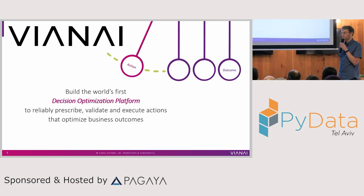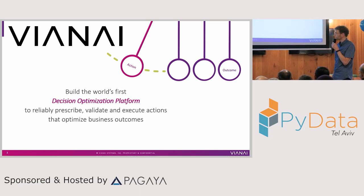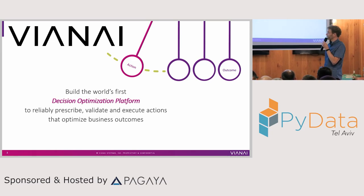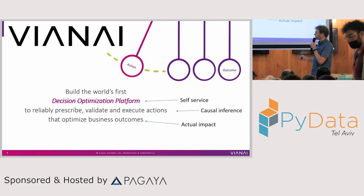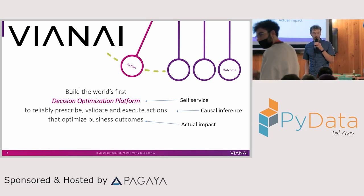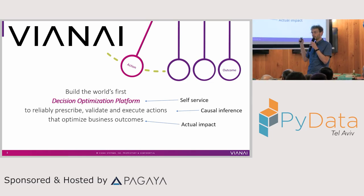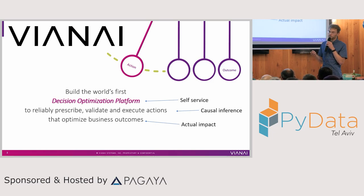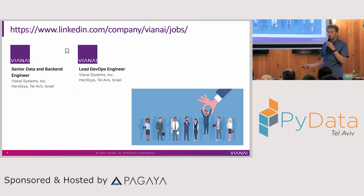A short word about ViNI. We're a company building the world's first decision optimization platform to reliably prescribe, validate, and execute actions that optimize business outcomes. It's a mouthful. In short, we're trying to build a self-service platform for businesses — a causal inference platform which truly optimizes outcomes. We're not just doing machine learning in general; we're trying to make impact in the company. And as a small growing company, if you're interested or know someone, please leave me a message.